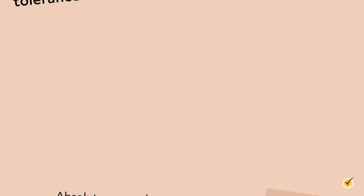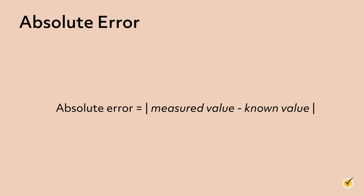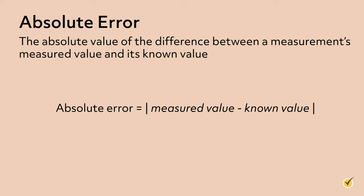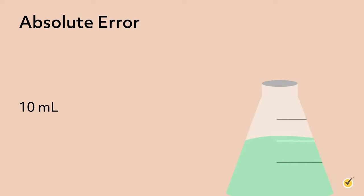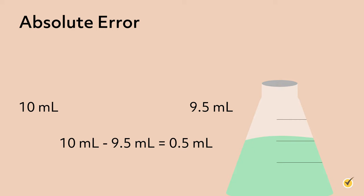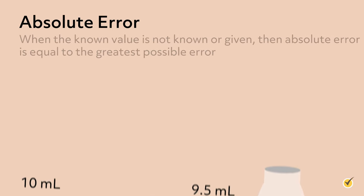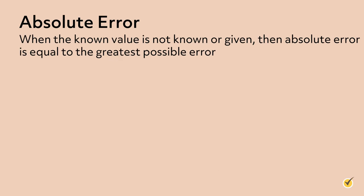Now onto some different methods to show errors in measurement. One of these methods is called absolute error. The absolute error is the absolute value of the difference between a measurement's measured value and its known value. The difference is always reported as a positive number, which is why there are absolute value bars shown in the formula. For example, say you know a chemistry experiment will yield 10 milliliters, but your solution is 9.5 milliliters. Since |10 − 9.5| = 0.5, the absolute error in this scenario is 0.5 milliliters. When the known value is not given, the absolute error is equal to the greatest possible error.